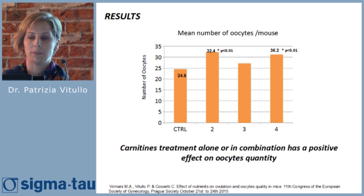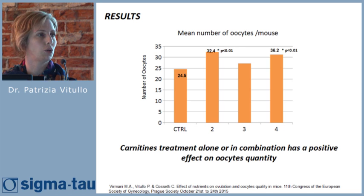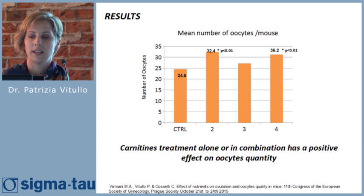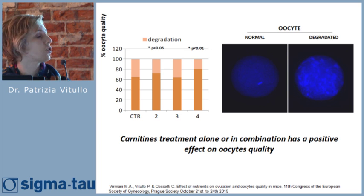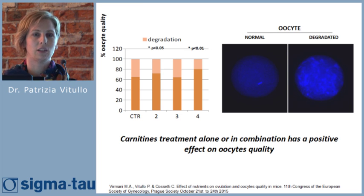The first results showed that carnitine treatment alone or in combination with iron, copper, and zinc has a positive effect on oocyte quantity. The major number of oocytes was observed in groups two and four. Also, carnitine treatment alone or in combination has a positive effect on the degradation rate, with a decrease in oocyte degradation. Through simple microscope observation, we could distinguish bad oocytes from good ones based on morphological aspects.